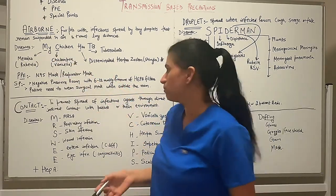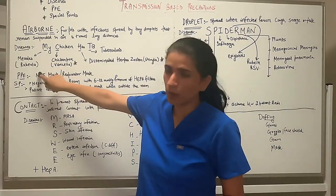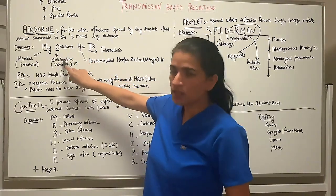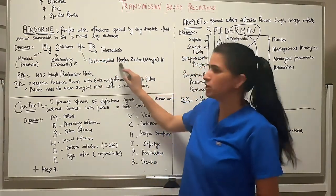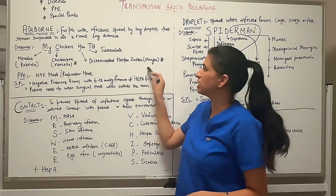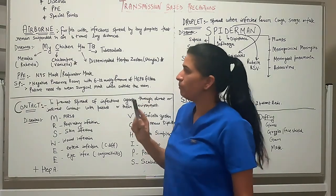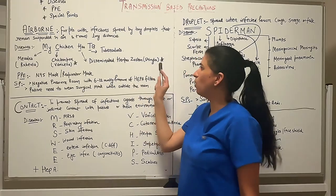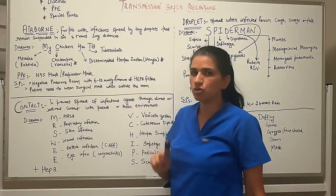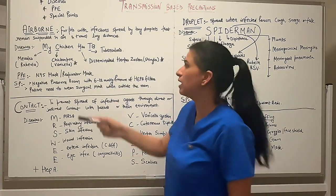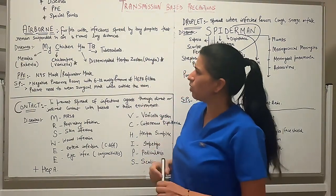For airborne diseases, use the mnemonic 'My Chicken Has TB.' M is for Measles, also called rubeola. C is for Chickenpox, which is varicella. H is for disseminated Herpes Zoster, also called shingles. T is for Tuberculosis. Important note: patients with chickenpox (varicella) or disseminated herpes zoster (shingles) also require contact precautions at the same time along with airborne precautions.